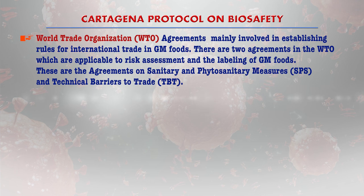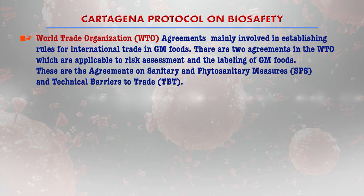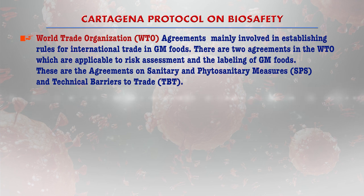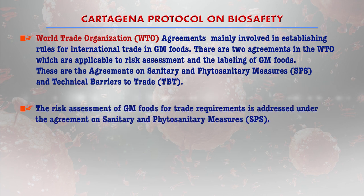The World Trade Organization agreements are also important, being mainly involved in establishing rules for international trade in GM foods. There are two WTO agreements applicable to risk assessment and labeling of GM foods: the Agreement on Sanitary and Phytosanitary Measures and the Agreement on Technical Barriers to Trade. The risk assessment of GM foods for trade requirements is addressed under the Agreement on Sanitary and Phytosanitary Measures.